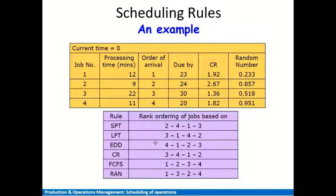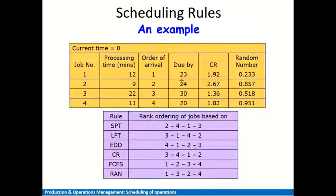The next rule is Earliest Due Date. The job with the earliest due date is processed first. Looking at the due dates: the 20th is the earliest, so job four goes first. Next is the 23rd, so job one goes second. Then the 24th — job two goes third. Finally, the latest due date is the 30th, so job three goes last. The EDD sequence is: 4, 1, 2, 3.